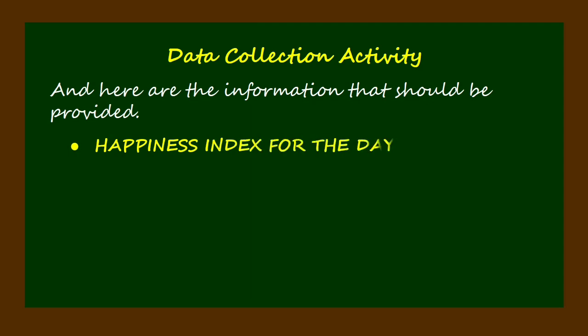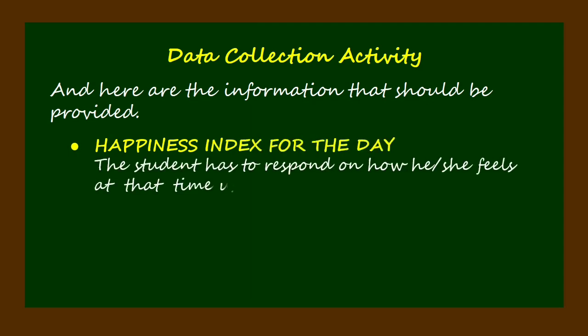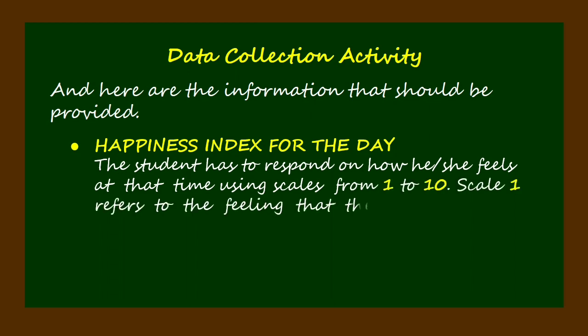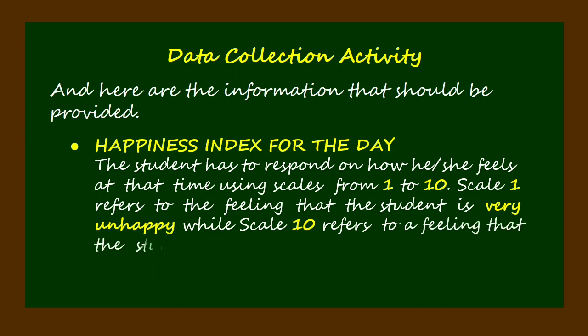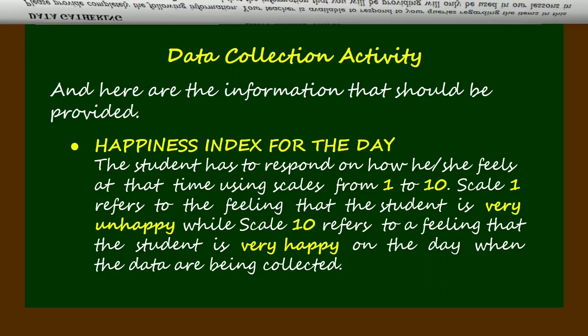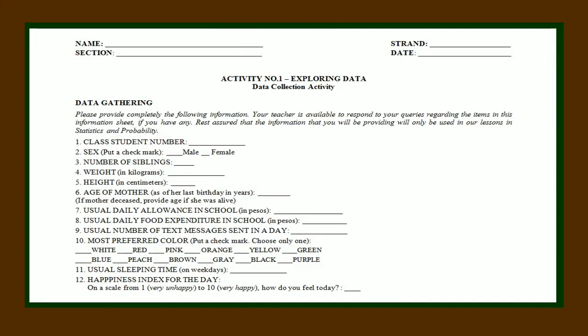Happiness index for the day — the student has to respond on how he or she feels at that time using a scale from 1 to 10. Scale 1 refers to the feeling that the student is very unhappy, while scale 10 refers to the feeling that the student is very happy on the day when the data are being collected. For the activity, the student must completely provide the necessary information as indicated in the student information sheet, which will be used for future lessons in statistics and probability.